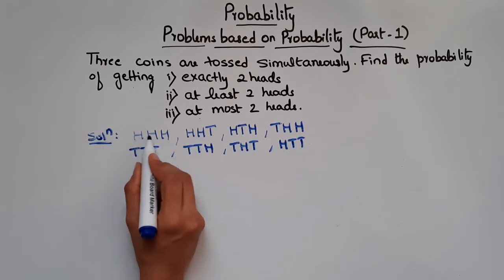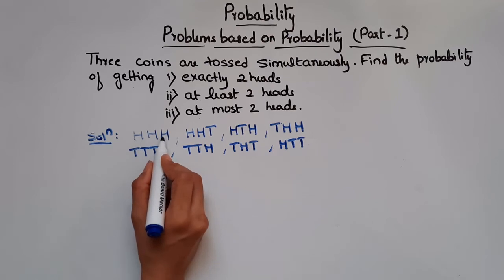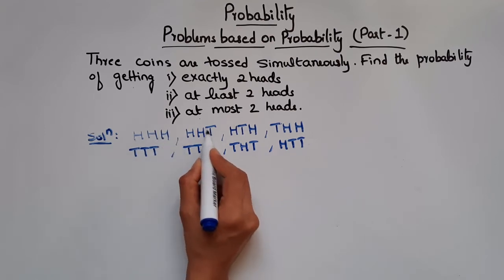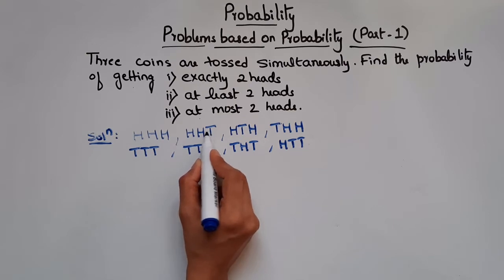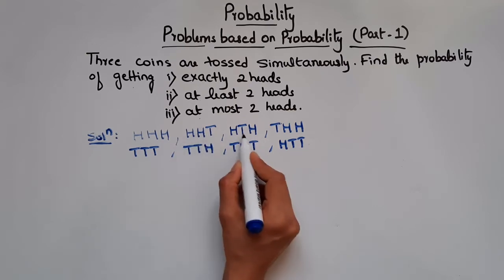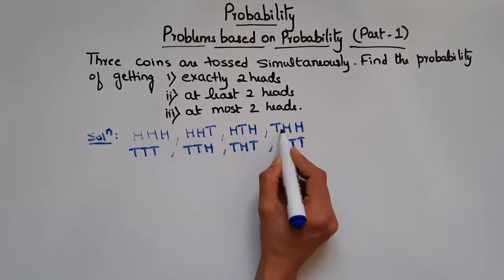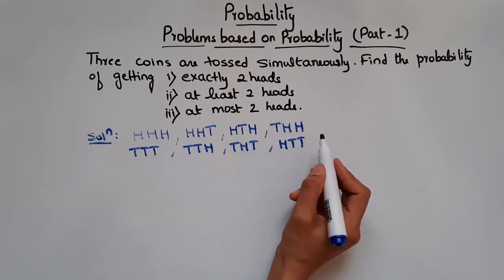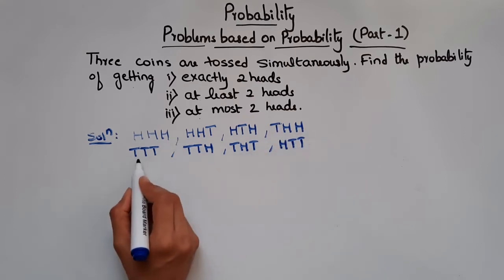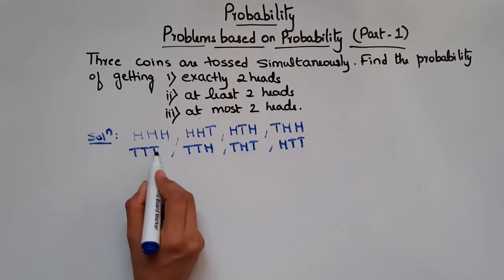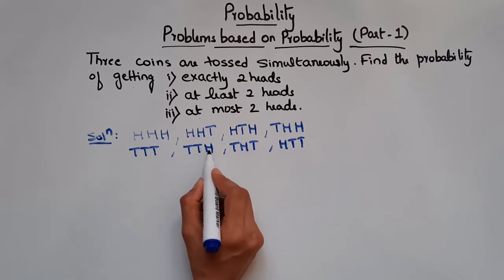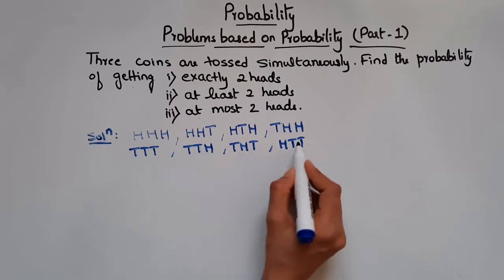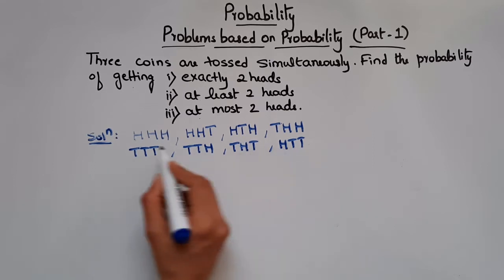To list all outcomes, first write head head head — 3 heads. Then replace one head with T to get head head tail. Next shift the tail to the middle to get head tail head. Then bring the tail to the first place to get tail head head. Similarly, starting from tail tail tail, replace the third place with H to get tail tail head, shift H to the middle to get tail head tail, then to the first place to get head tail tail.